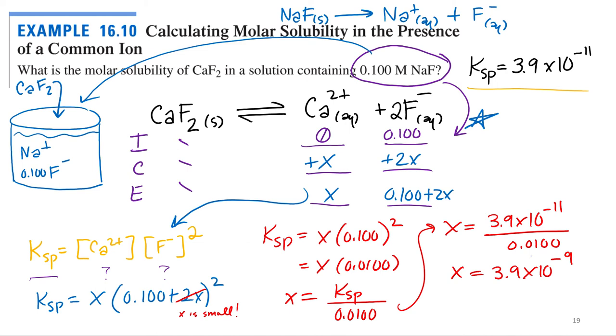And that x is our molar solubility. So that's what we're looking for. So the molar solubility of calcium fluoride is 3.9 times 10 to the negative 9.